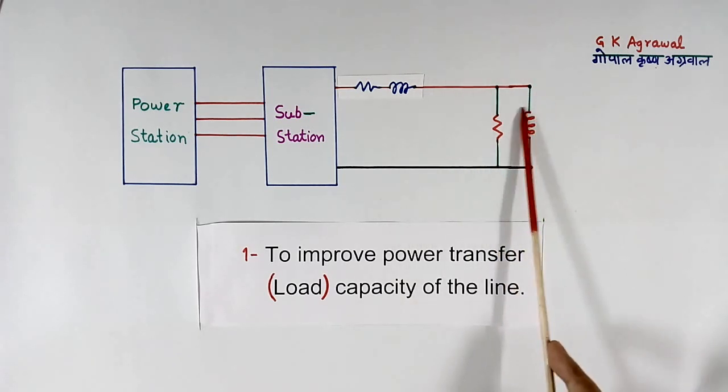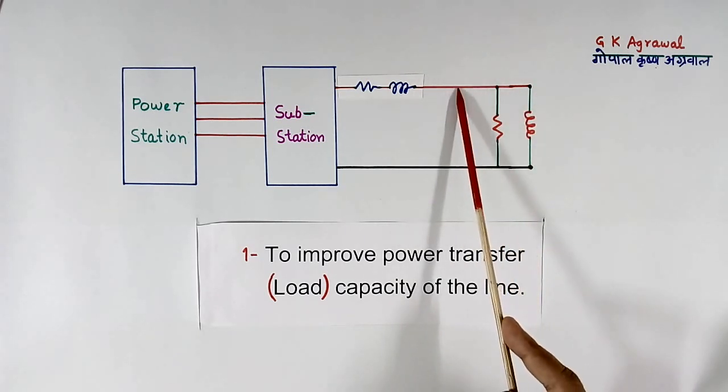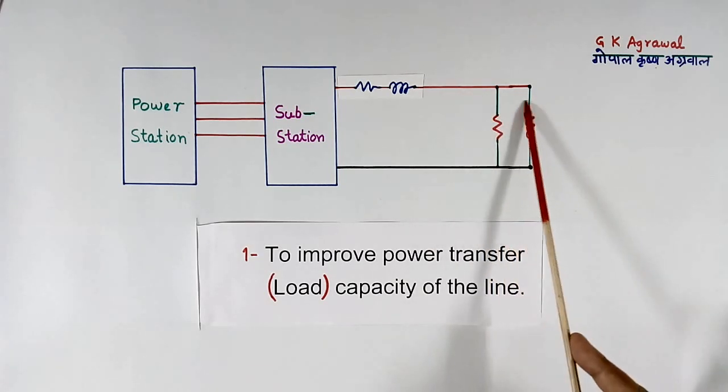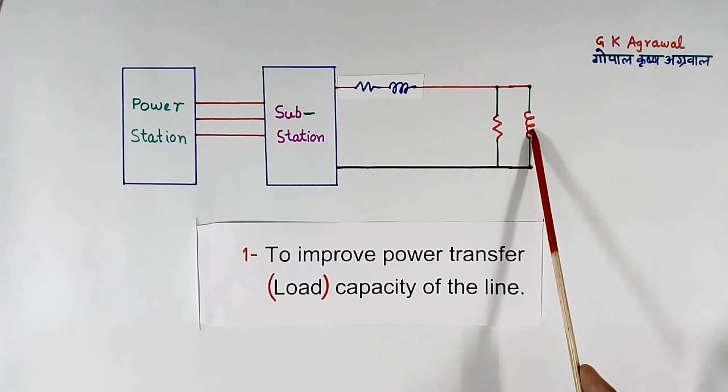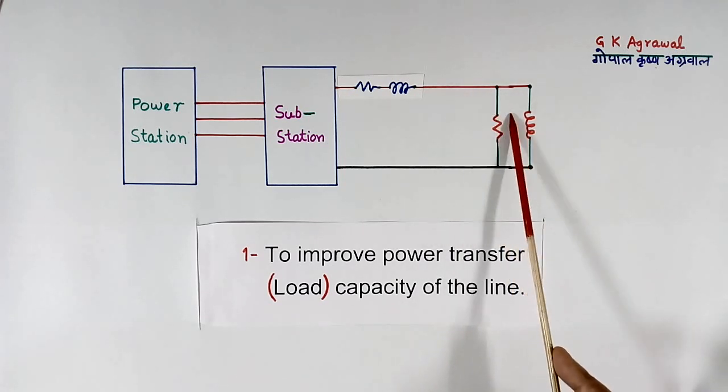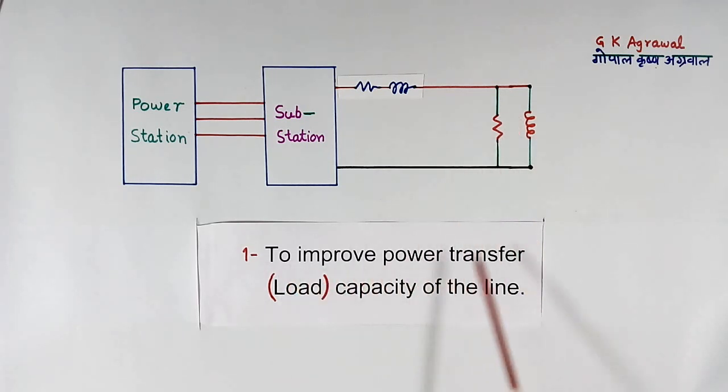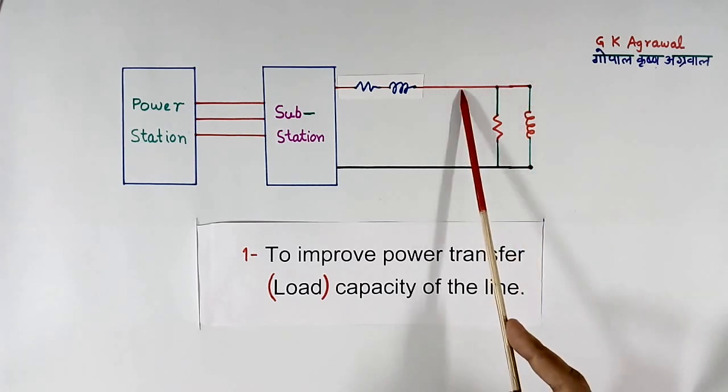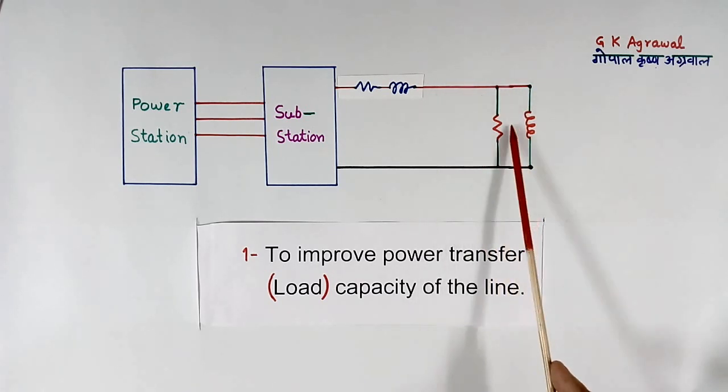If we remove this somehow, then here current will reduce. Then we can connect more load because this current is not there. So additional load can be connected. That is what it is called, to improve the power transfer capacity. Because by improving power factor, we can reduce the current here, so we can connect more load.